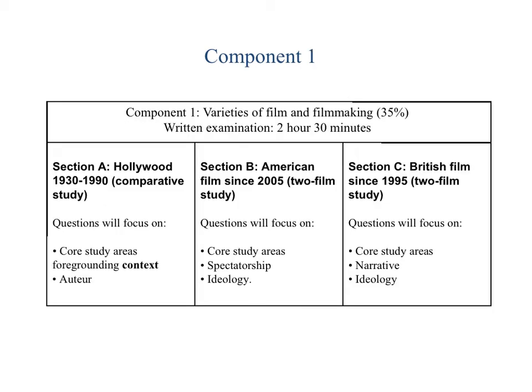Component 1 is where you will study varieties of film and filmmaking. We have Section A, Hollywood 1930–1990, comparative study. Section B, American film since 2005, a two-film study. And Section C, British film since 1995, a two-film study also.